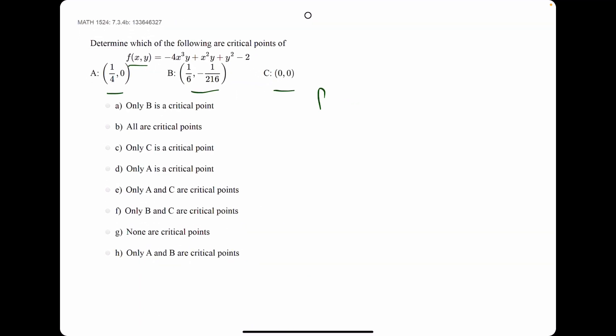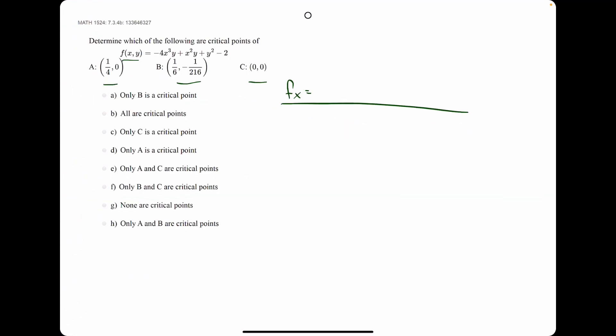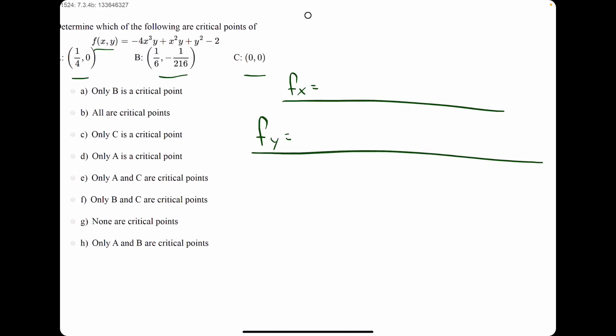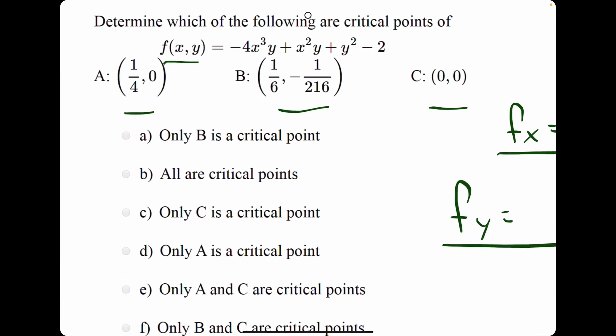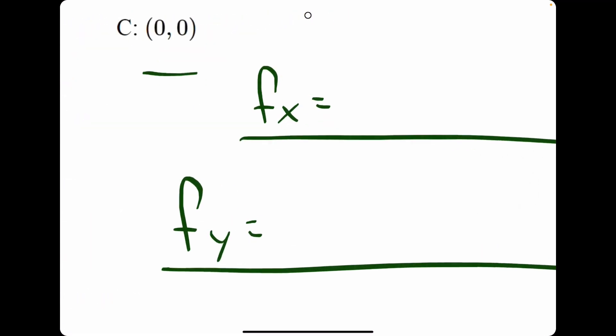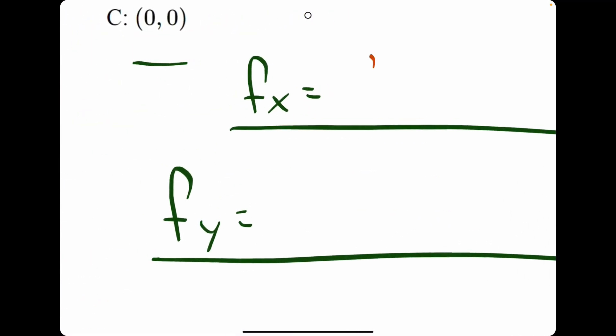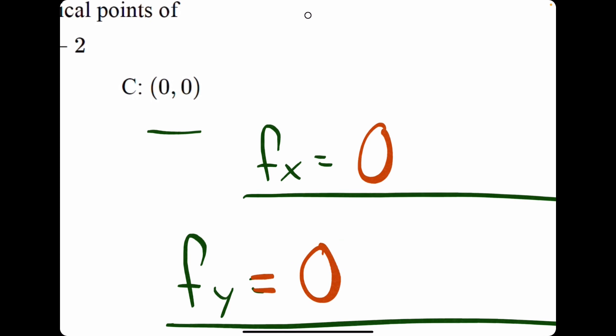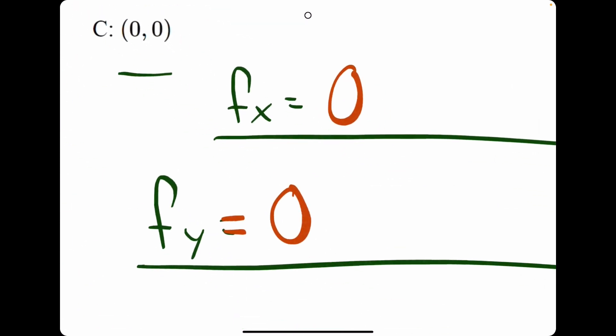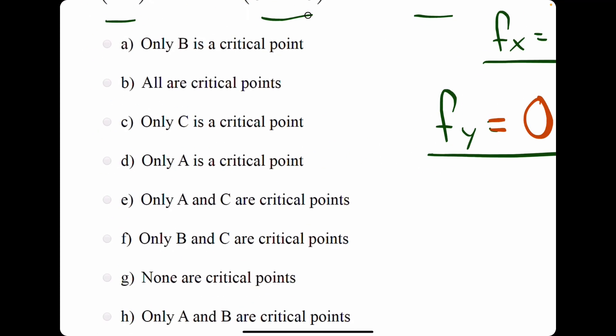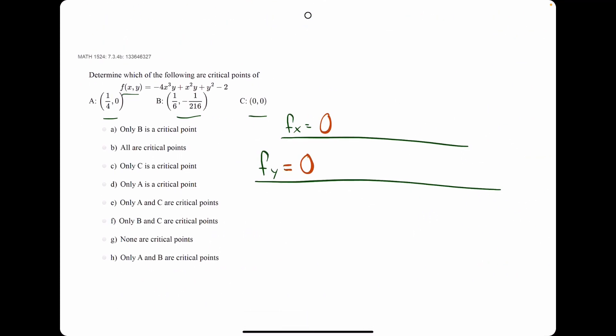So, what we'll do is find the first partial derivative with respect to x, find the first partial derivative with respect to y, and then we'll plug and chug these three ordered pairs into both fx and fy, in hopes of finding that fx and fy are both equal to zero. Plugging in an ordered pair and seeing that both fx and fy are equal to zero, that's what would tell us that one of these ordered pairs is a critical point.